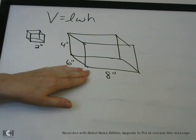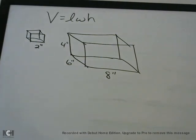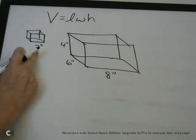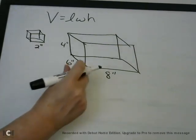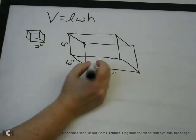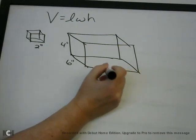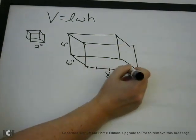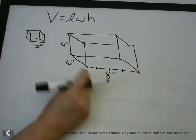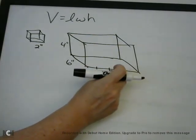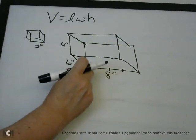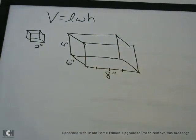If it says how many blocks can fit into this, you can figure it out logically. If the block is 2 inches, then across the bottom we can put one block for 2 inches, another for 4 inches, another for 6 inches, and one last one for 8 inches — so we can get 4 blocks across the bottom.